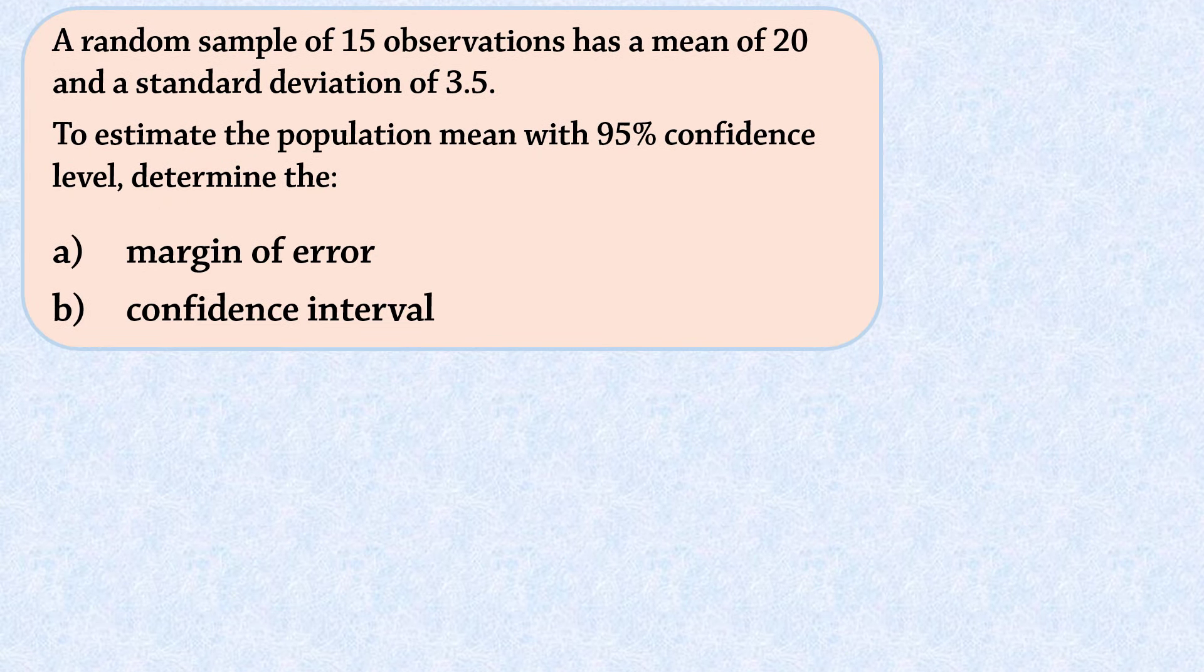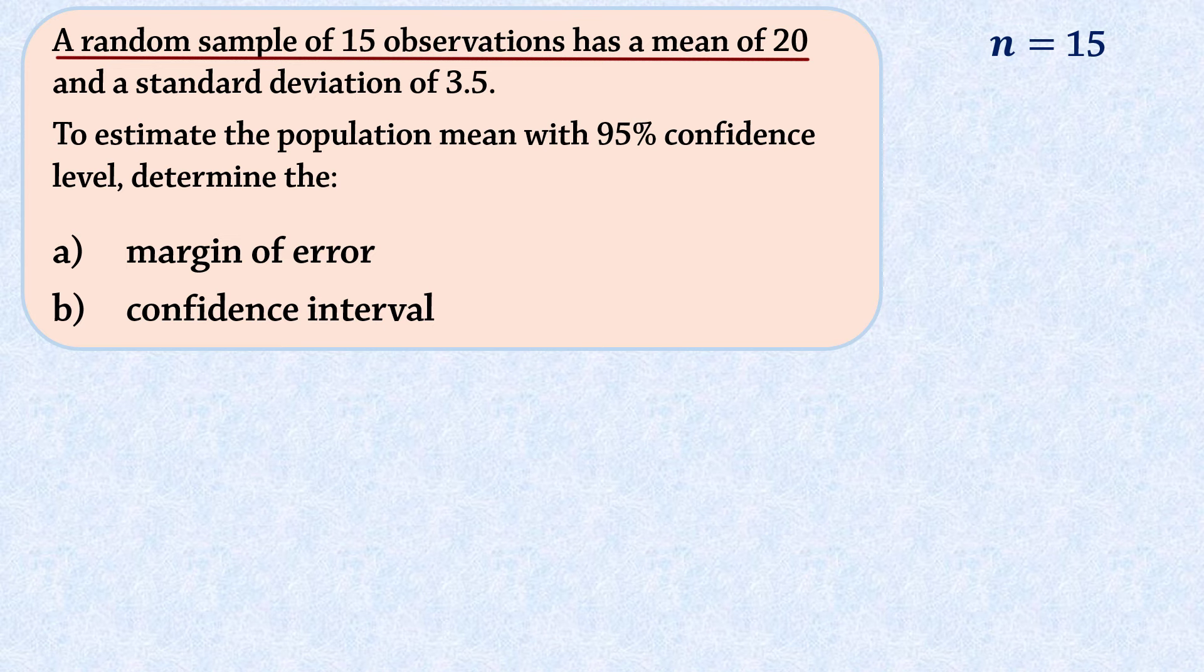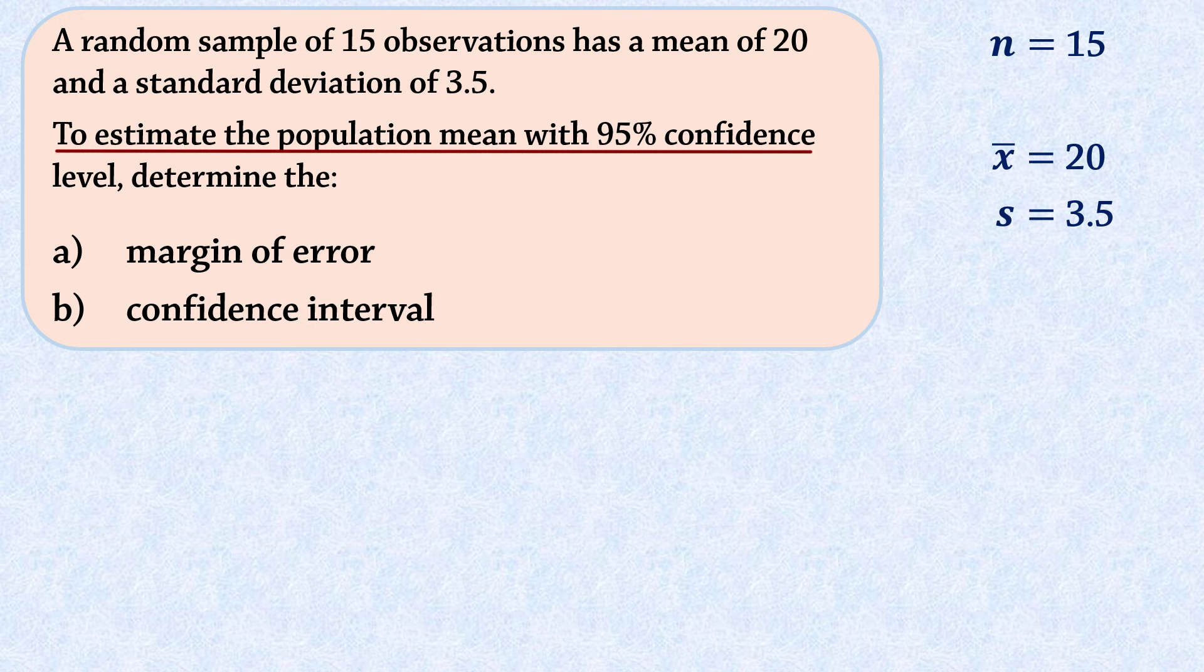Let's look at some examples. A random sample of 15 observations has a mean of 20 and a standard deviation of 3.5. To estimate the population mean with 95% confidence, that is, at the 95% confidence level, we want to first determine the margin of error and then the confidence interval.